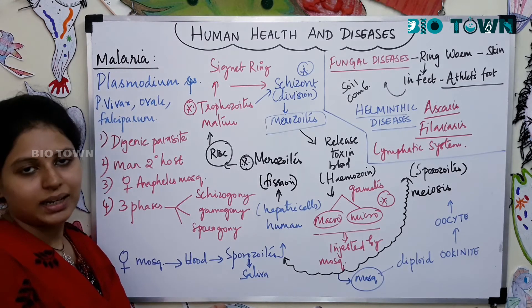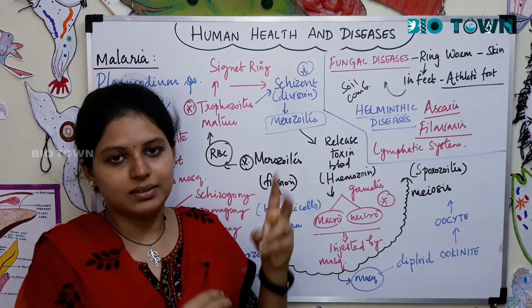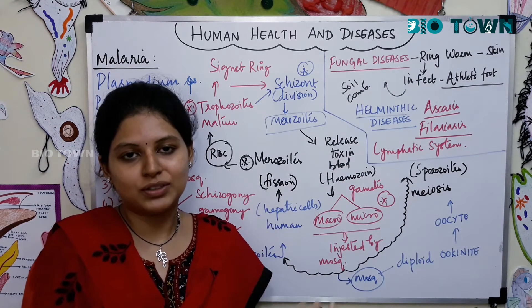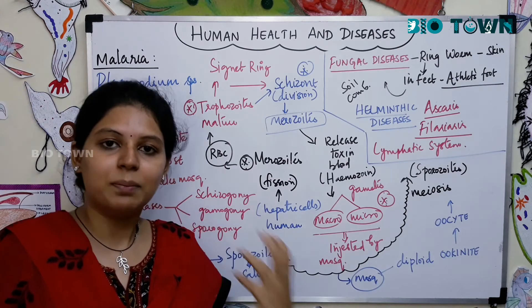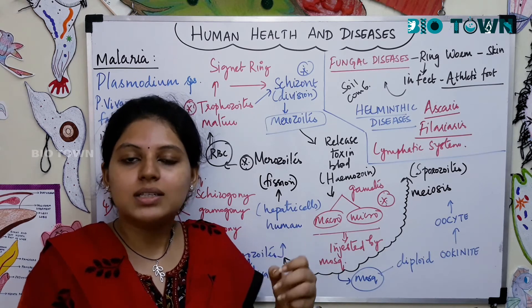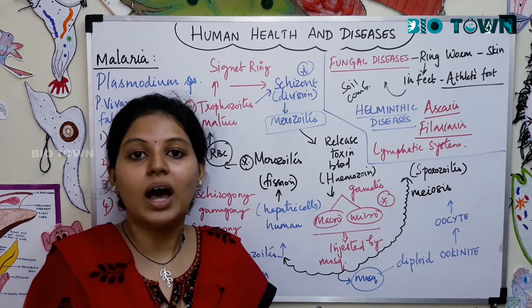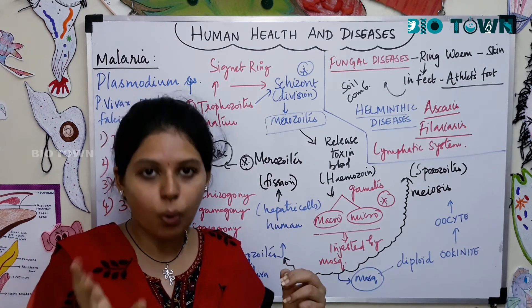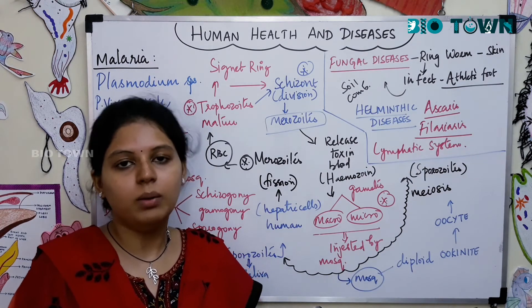There is an endo-erythrocytic cycle and an exo-erythrocytic cycle in the life cycle of Plasmodium. Now regarding fungal diseases: ringworm infection is a type of fungal infection, not caused by worms. These fungi are present in the soil and spread to humans through unwashed clothes and combs. In humans they affect the skin, causing red patches and sore skin. Personal hygiene is important. When ringworm infection is caused on the feet, it is called athlete's foot.